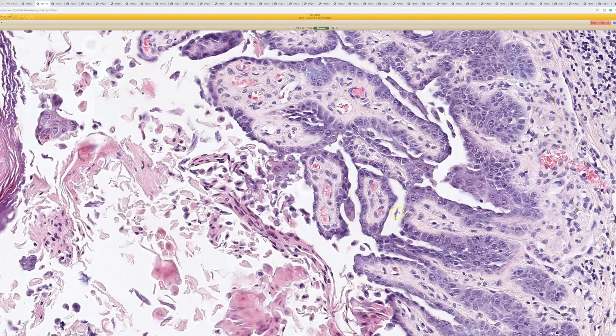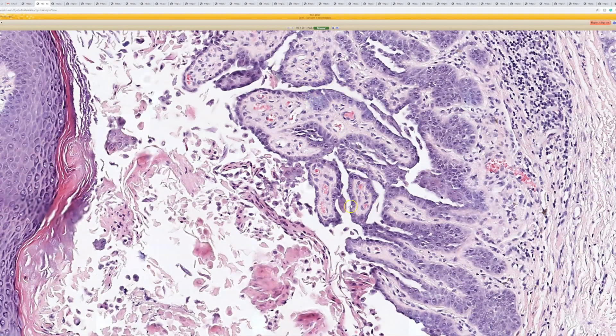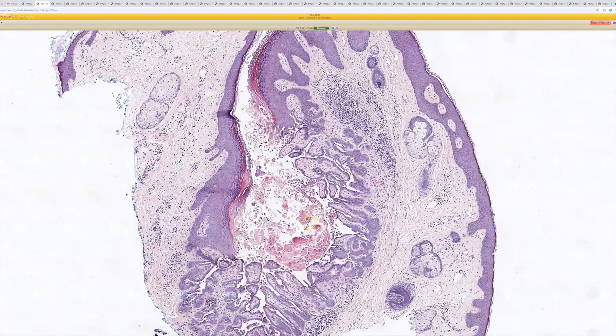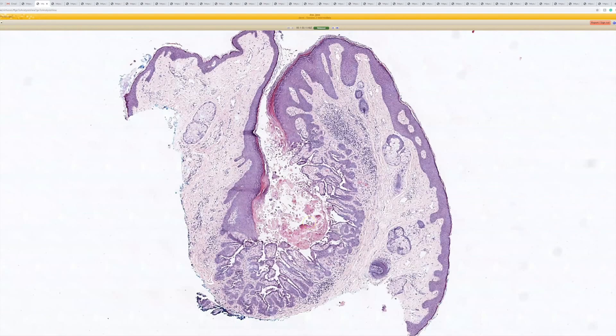here you can see nice acantholysis giving you this kind of invaginated, almost frond-like appearance. And the key to it is that it's acantholytic and dyskeratotic, and it's in a kind of invaginated cystic lesion, usually on the face, right?